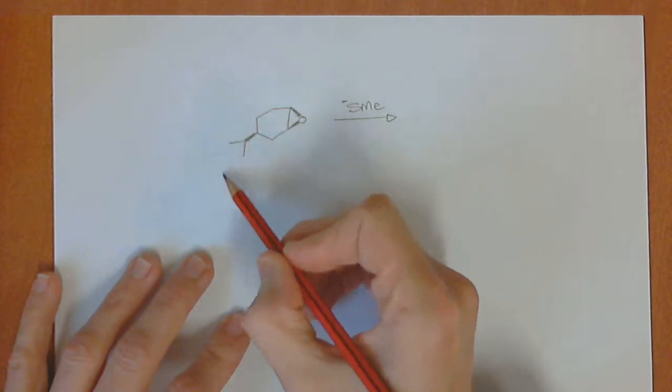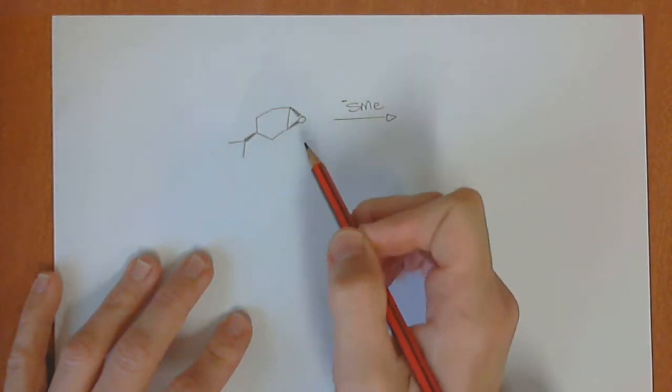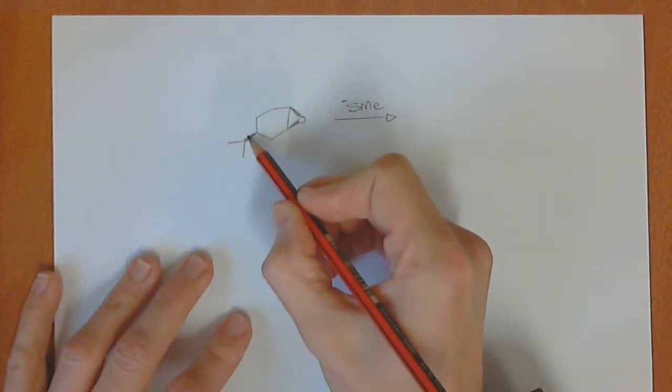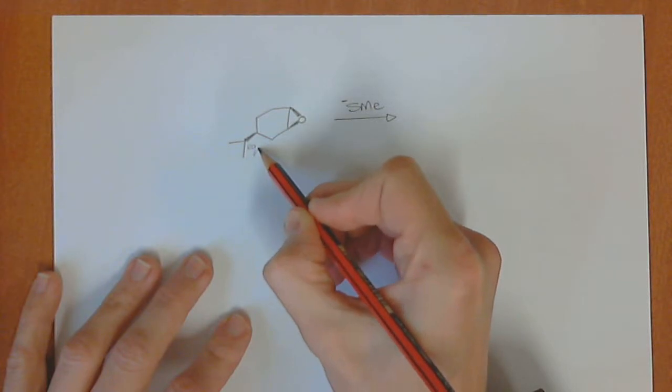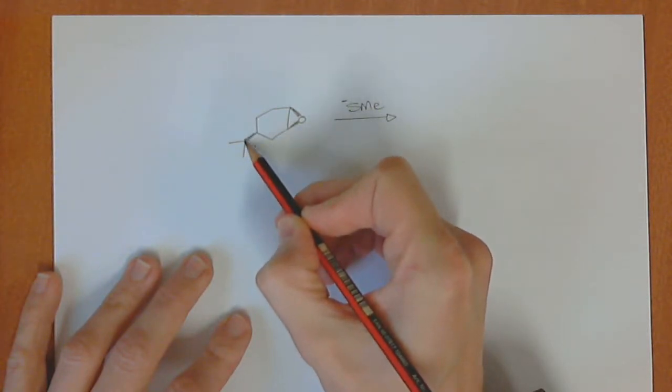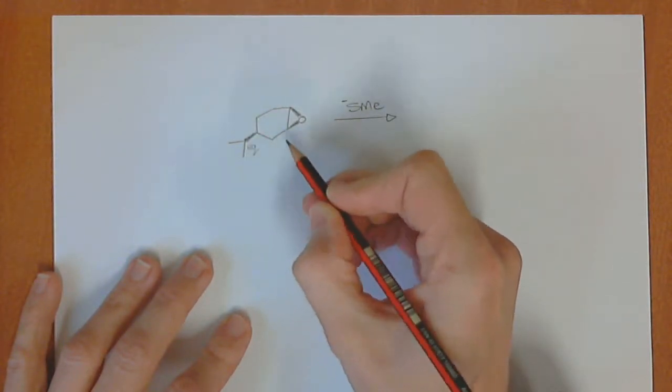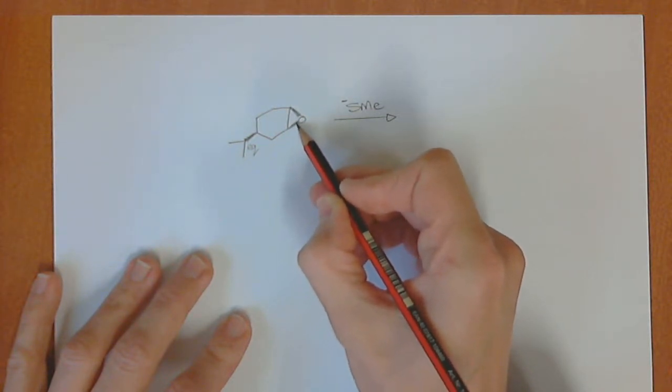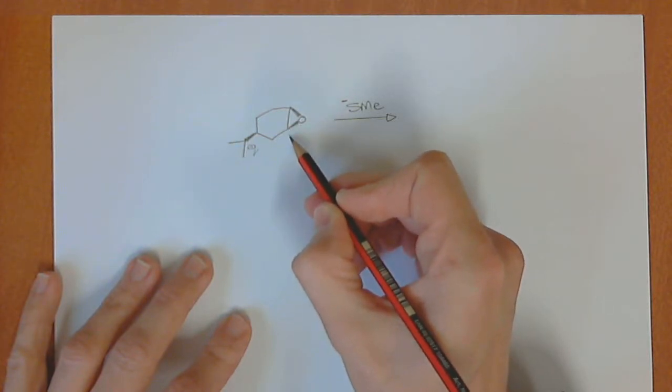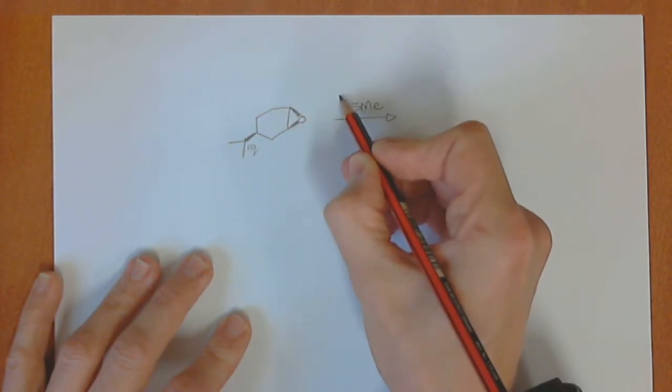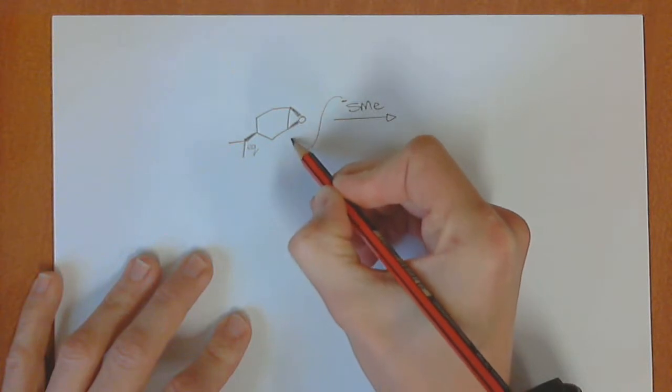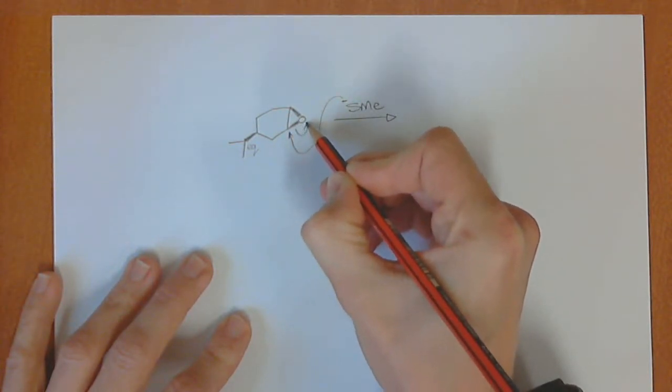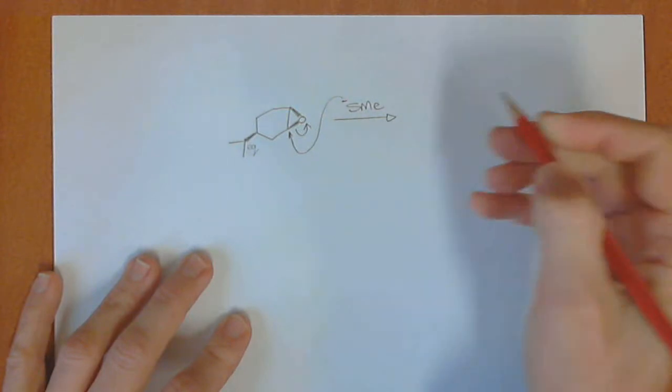To decide what that is, we look at the isopropyl group which will act as a locking group. We say that this must be in an equatorial position, so it's equatorial up, equatorial down, equatorial up. That means this bond is in an equatorial position, which means that down is axial. So the sulfur anion wants to come in from this position because it will end up down, and this will open up like that.